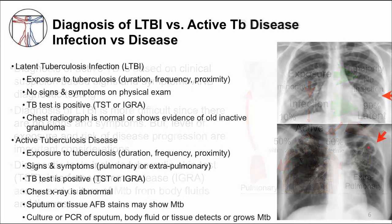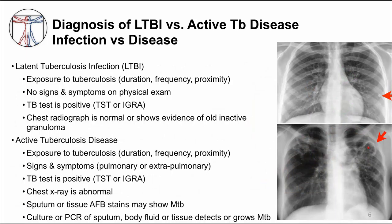Let's start with latent TB infection. We are looking for evidence of TB infection without evidence of TB disease. You should ask about exposure to MTB and specifically consider the duration, frequency, and proximity to evaluate the risk. Make sure there are no signs or symptoms of active TB disease. If you have suspicion of TB exposure, you can do a TB test — either a TST or IGRA. For latent TB infection, these should be positive. If the TB test is positive, obtain a chest radiograph, which is normal or shows evidence of an old inactive calcified nodule. You can see this calcified nodule in the top chest image — the red arrow points to it. This person does not have active TB disease.